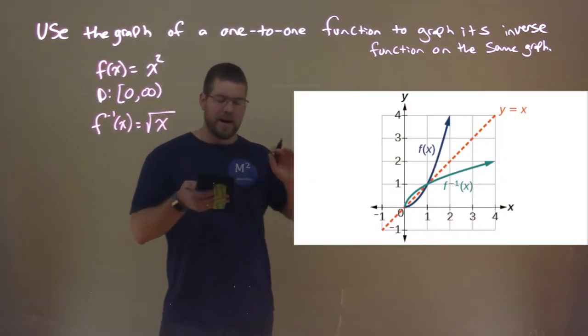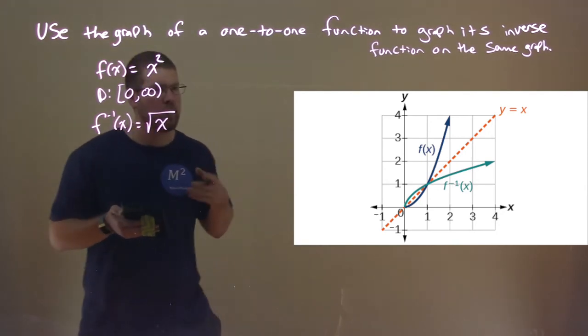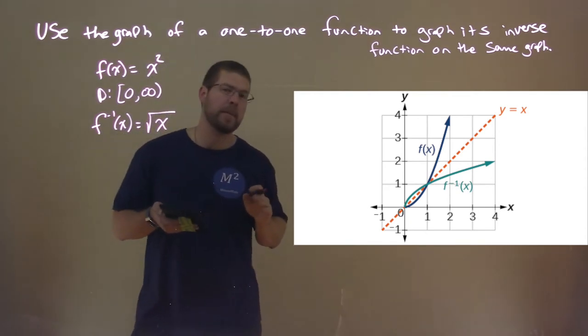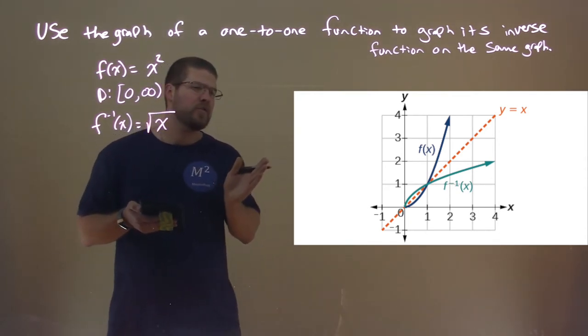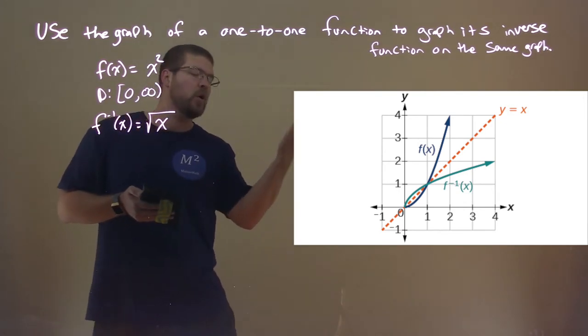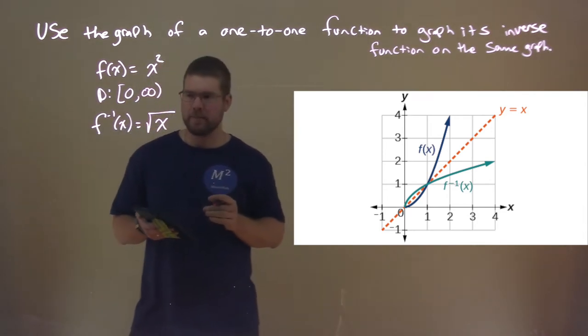We can see it there in our teal graph, but notice it's the same as being reflected over the line y equals zero, or the identity graph, or identity line. And so, an inverse function is basically reflected over that line, and that's what we have right here.